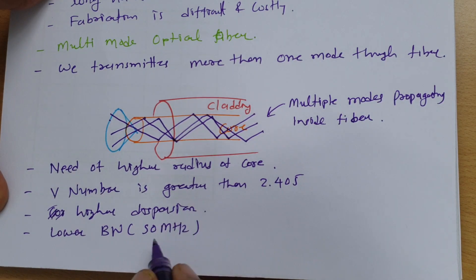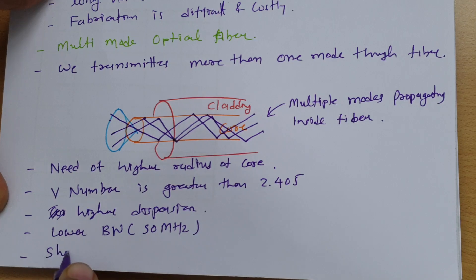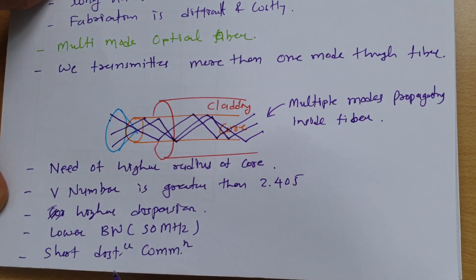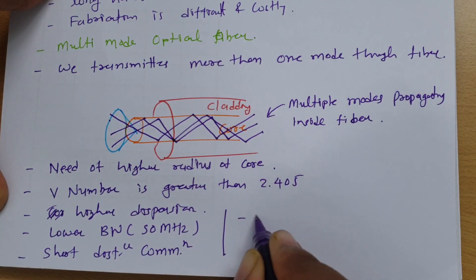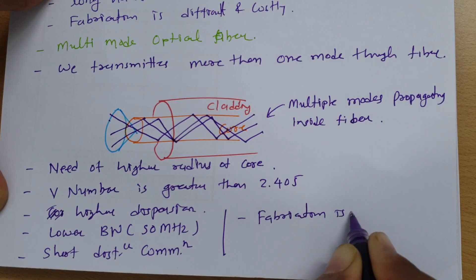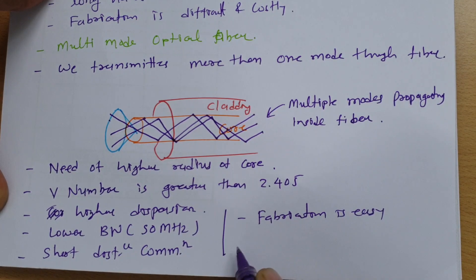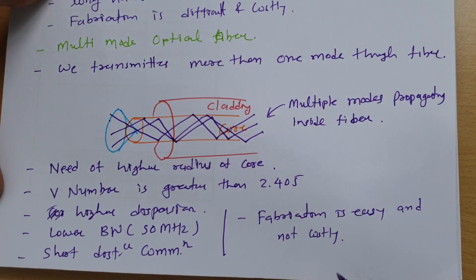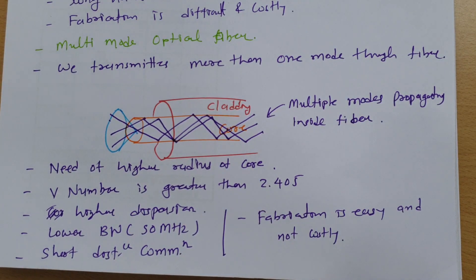Multi-mode optical fiber is used for short-distance communication. Fabrication is easier and less costly compared to single mode optical fiber.